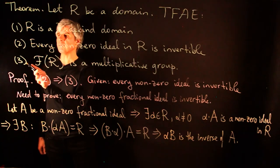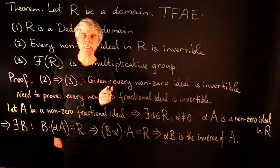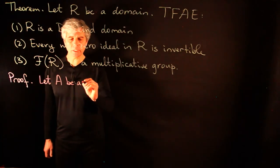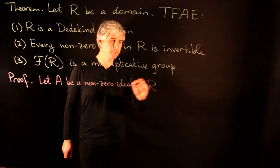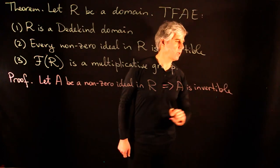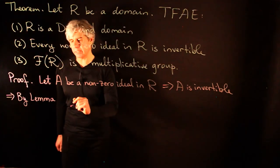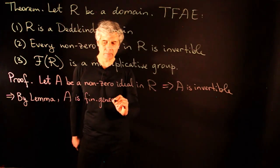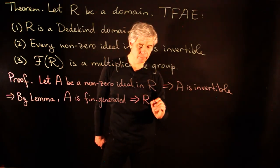It remains to prove that three implies one. Assume F(R) is a multiplicative group. We need to prove R is Noetherian, integrally closed, and every prime ideal is maximal. Let A be a nonzero ideal in R. By assumption A is invertible, and by our lemma every invertible ideal is finitely generated. So A is finitely generated as an ideal, implying R is Noetherian.